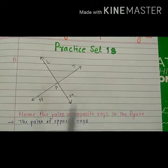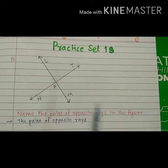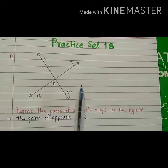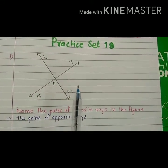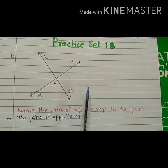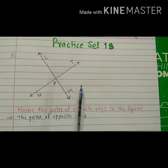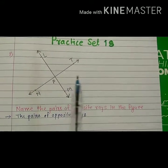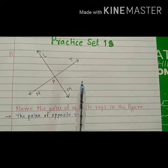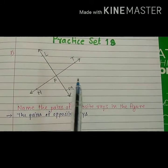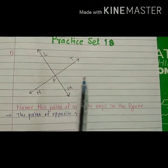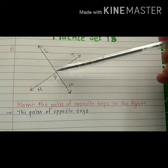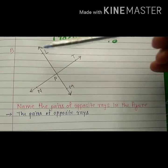The definition of opposite rays is: two rays have a common origin and form a straight line are said to be opposite rays.